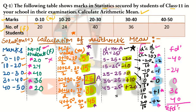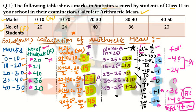Now we add all fd' values to get Σfd'. Negative values: −40 + (−24) = −64. Positive values: 36 + 40 = 76. Now −64 + 76 = +12 (the sign of the larger value, 76 which is positive, is taken). So Σfd' = +12. Now add all frequencies to get Σf = total number of observations: 20 + 24 + 40 + 36 + 20 = 140. So Σf = 140.